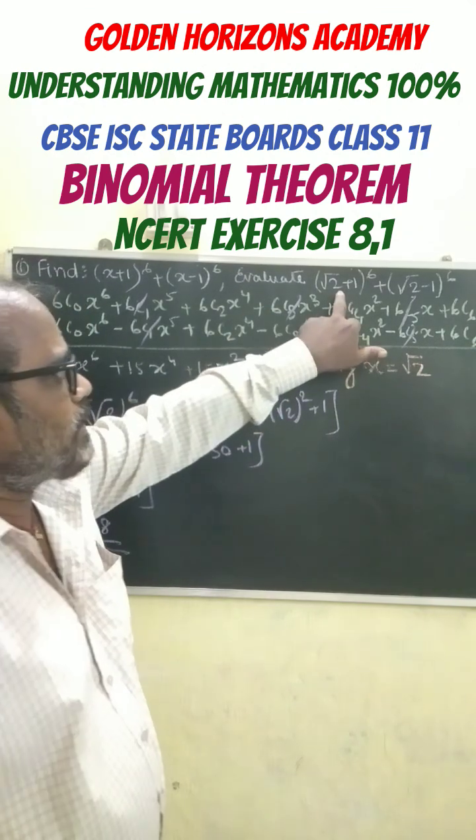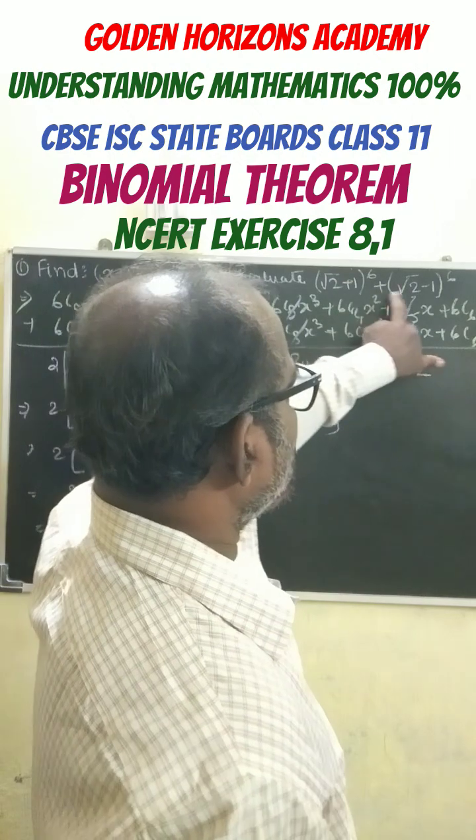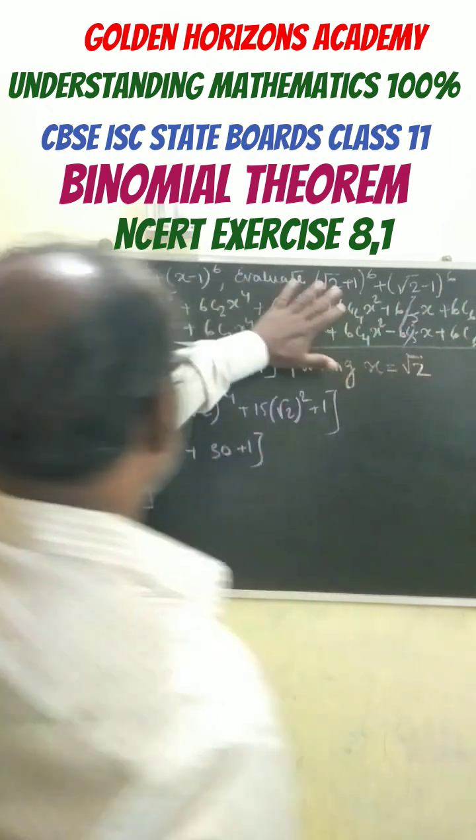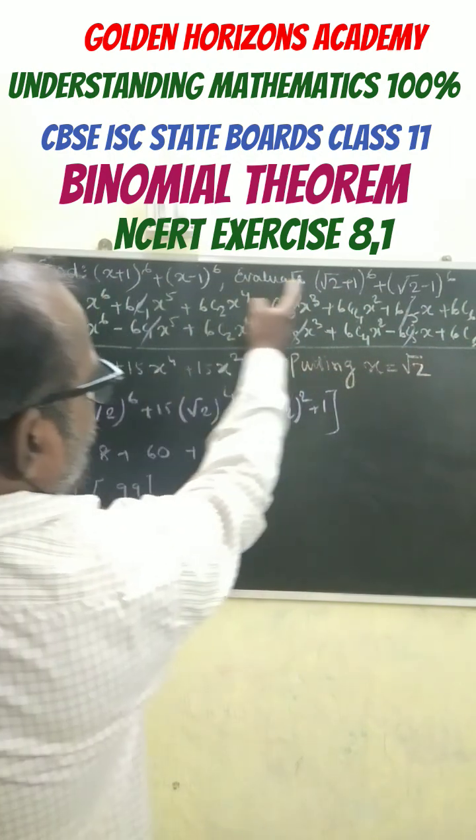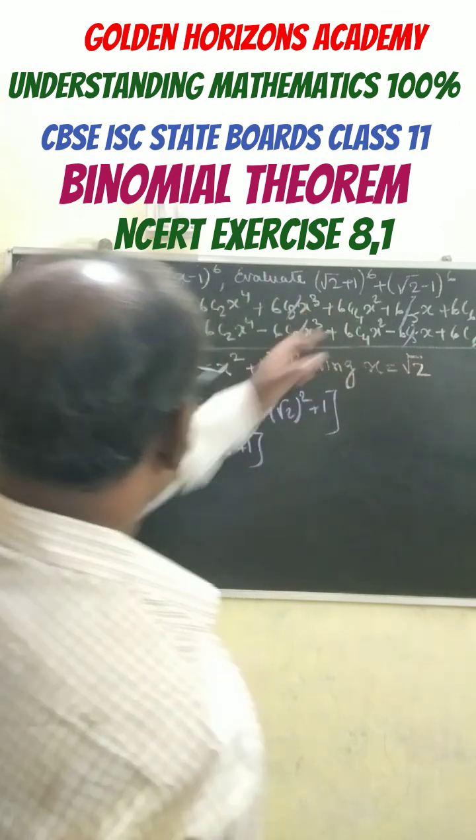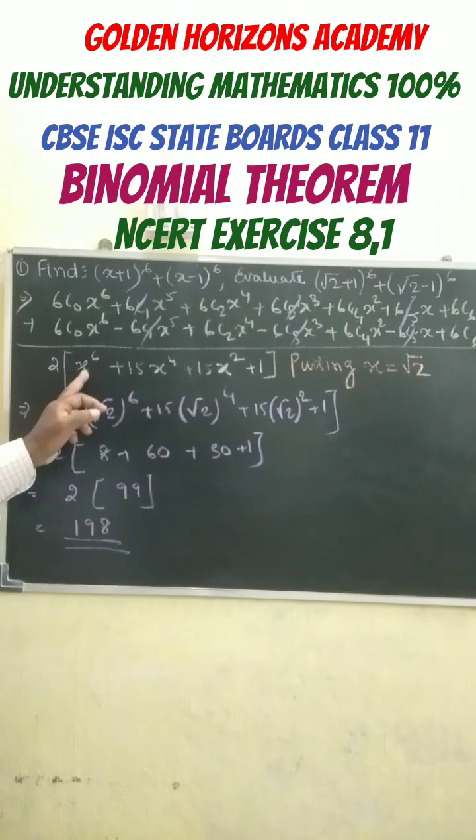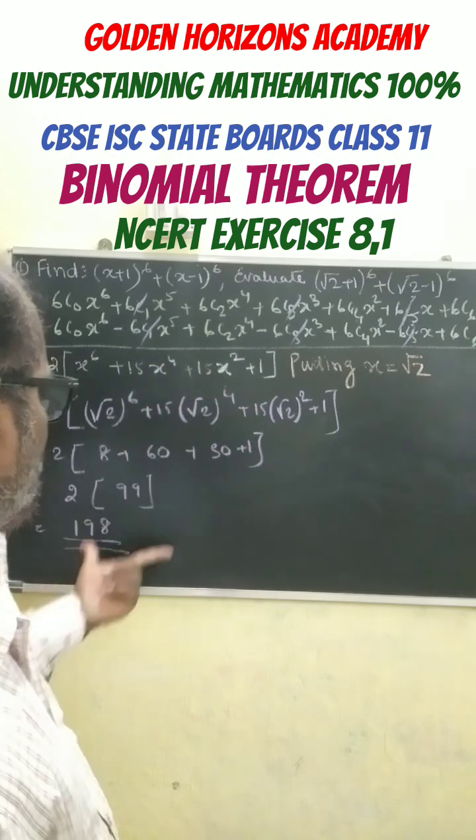But later in the question, they have asked that we have to evaluate this. If you compare with this and this, instead of x you can put √2 over here. So instead of x, put √2, and finally if you put √2 instead of x, we get this solution.